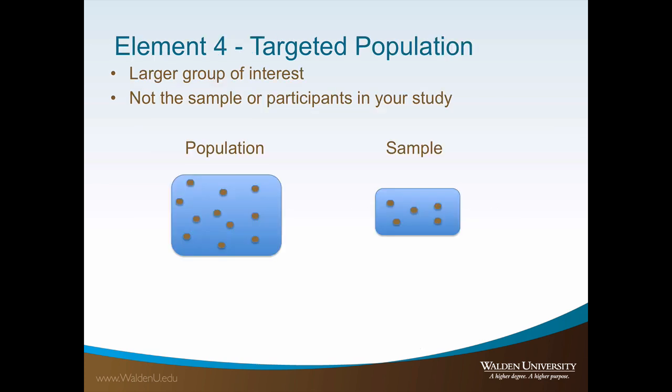A population is the larger group that you are studying. The population is the fourth element that you must include in your purpose statement. The population is not to be misconstrued as a sample or your study participants — you will select your sample or your study participants from this larger population. For example, your population might be all small businesses in New York, but you will select a subset of small businesses in New York to serve as your sample or participants.